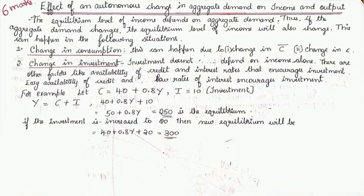If you are not understanding this, there is no issue. In the graph, we will be able to see the same thing clearly. Aggregate demand change will lead to equilibrium level of income change. Now how this change will happen? This can happen in two cases: first, change in consumption, second, change in investment, or both consumption and investment are changing.